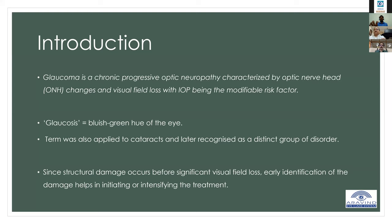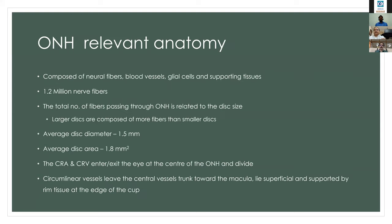Regarding the relevant anatomy, the optic nerve is composed of numerous neural fibers, blood vessels, glial cells, and supporting tissues. Each optic nerve consists of 1.2 million fibers. The total number of fibers passing through the optic nerve head is related to the disc size — the larger the disc, the more fibers it contains. The average disc diameter is 1.2 millimeters and area is 1.8 square millimeters.